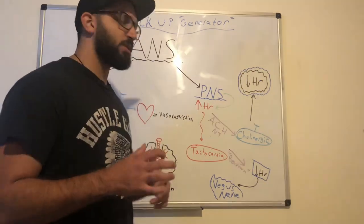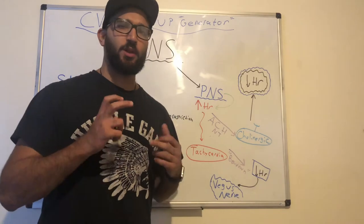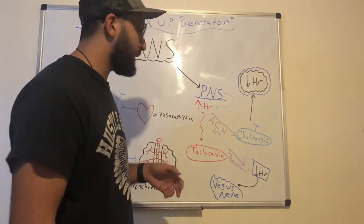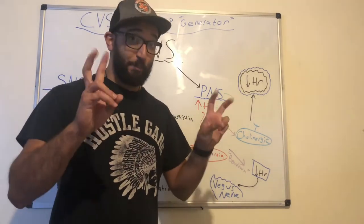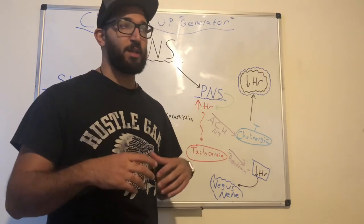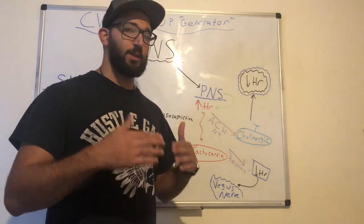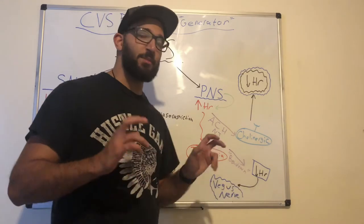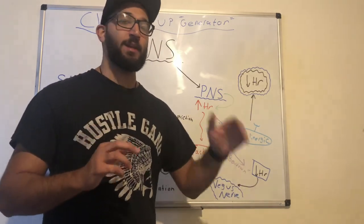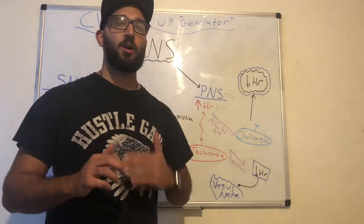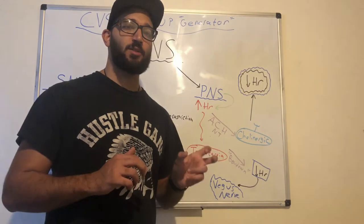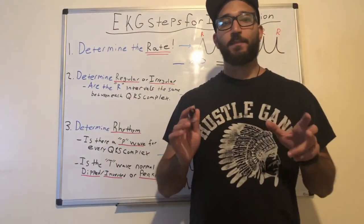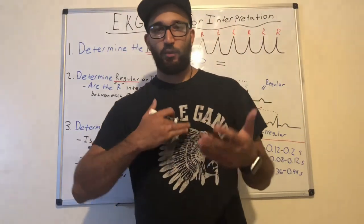Something else we can do to help decrease the heart rate of a patient who is very tachycardic is to advise them to bear down — meaning we want them to get into a position that stimulates their vagus nerve and decreases their heart rate. By stimulating the vagus nerve, it's going to decrease their heart rate.